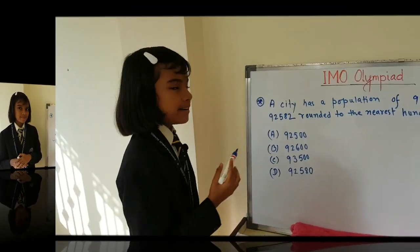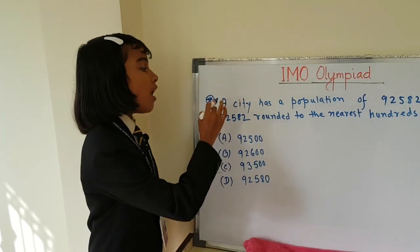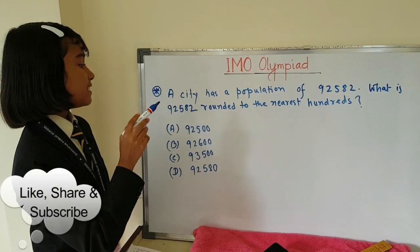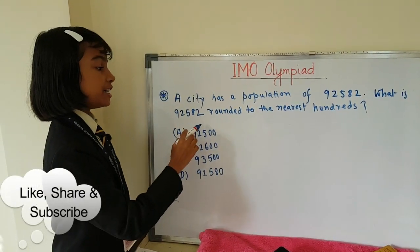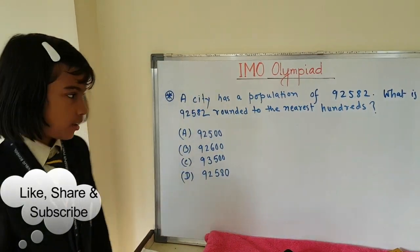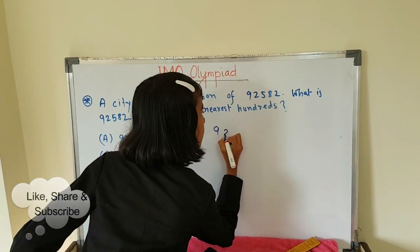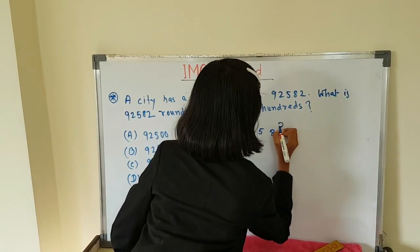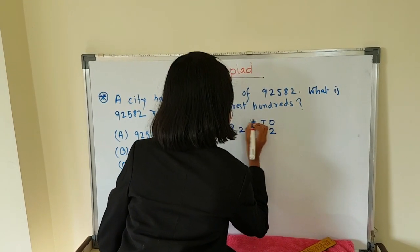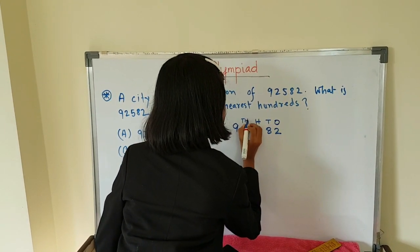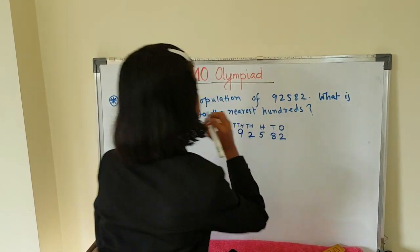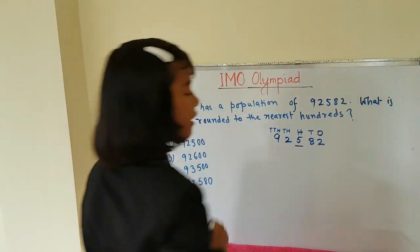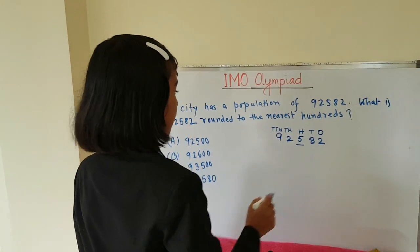Now let's move to the next question. A city has a population of 92,582. What is 92,582 rounded to the nearest hundreds? So first: ones, tens, hundreds, thousands, ten-thousands. The hundreds place has a 5, so we need to find the nearest hundred for this number.